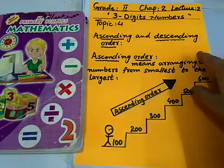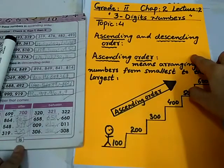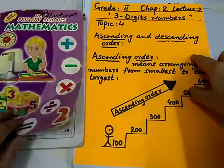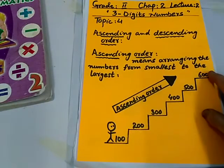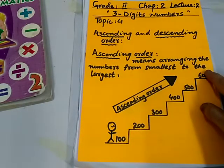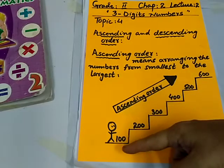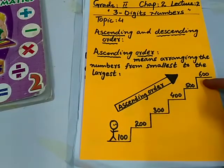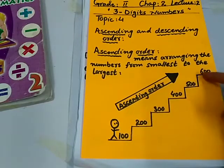Now, ascending order. In your book, page number 15, ascending order. Ascending order means arranging the number from smallest to the largest. Ascending order, down to up the numbers. 100, 200, 300, 400, 500 and 600.